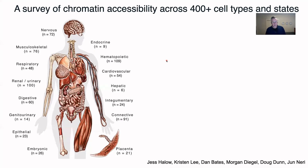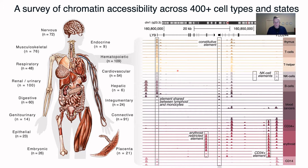In order to start addressing this problem, we decided to do a survey of chromatin accessibility across more than 400 different cell types and states by way of DNase-seq in more than 700 human biosamples, collected across the human body across all major organ systems. To give you a taste of what these data look like for a small region of the genome in only a small subset of hematopoietic cell types, you can already see a huge, very complex and varied patterning with which these elements occur or do not occur across different cell types.